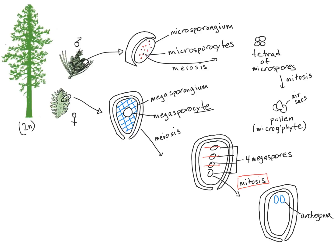Remember, archegonia produce eggs. So inside each archegonium, there is an egg. Recall that the eggs are haploid.